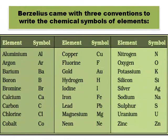First convention: the first letter of the name of the element denotes its symbol. For example, carbon — the first letter is C, hence its symbol is C. Boron — the first letter is B, hence the symbol of boron is B. Hydrogen — the first letter is H, hence the symbol is H. Similarly: iodine I, oxygen O, nitrogen N, sulfur S, uranium U, etc.